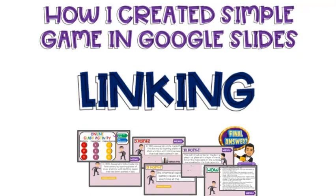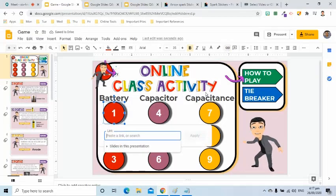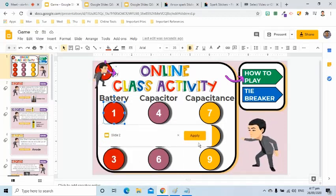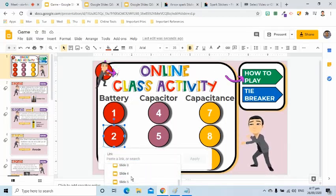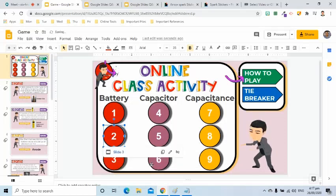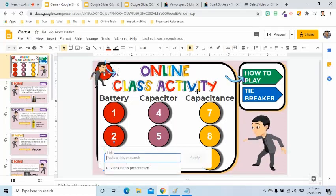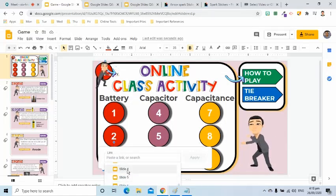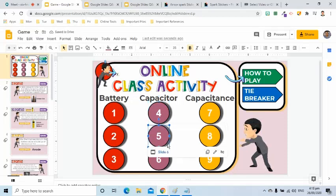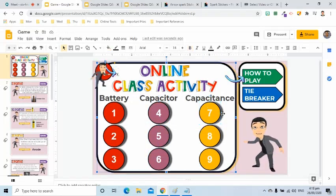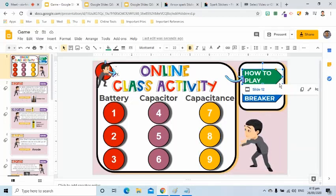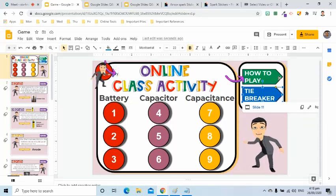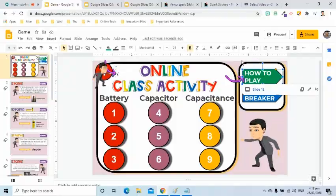Suppose I'm done doing all the question slides. I will go back to the first slide to link each circle to its respective question. Circle 1 will be linked to slide 2, circle 2 to slide 3, circle 3 to slide 4, and so on until circle 9 is linked to slide 10. Slide 11 has the tiebreaker question, so I will link that shape to it. For the instructions, I will link that shape to slide 12 where the mechanics can be found.